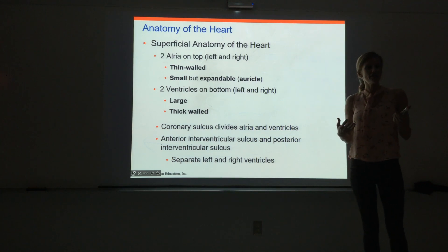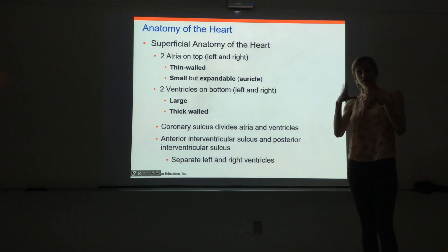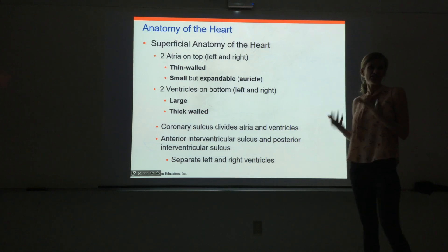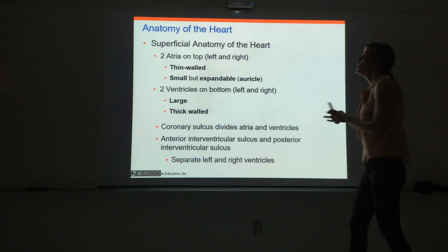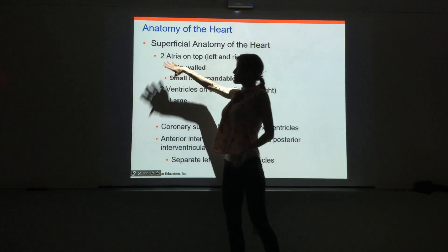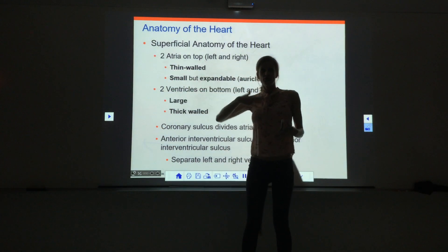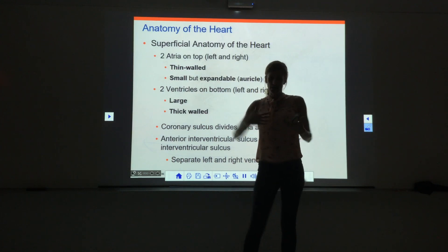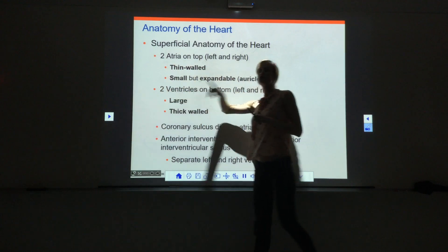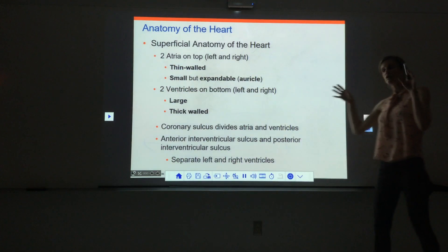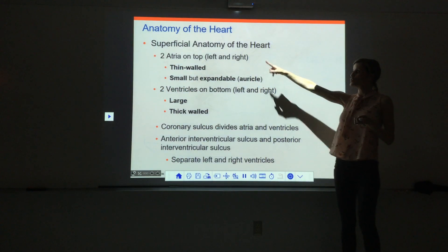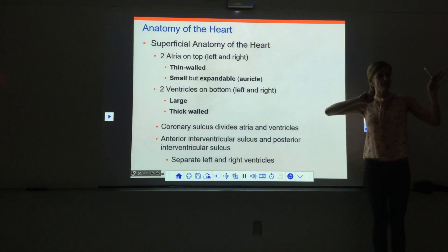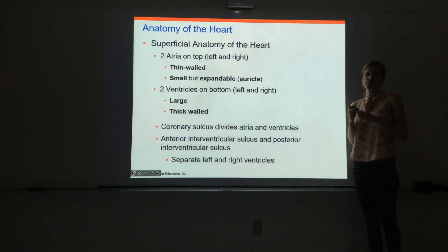Now we'll take a second to talk about the superficial anatomy — that's the surface anatomy, what you see looking at the heart from the outside. We have four chambers. You can differentiate between them from the outside: the two atria on top and the two ventricles on the bottom.